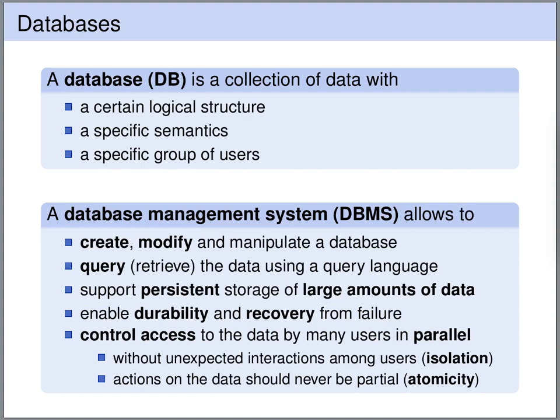The database management system also provides access control such that many users can work in parallel, and it does so in a way that excludes unexpected interactions between users — this is called isolation. It also ensures that the actions of users are always done either fully or not at all — this is called atomicity.